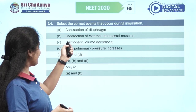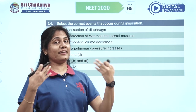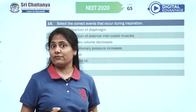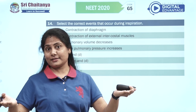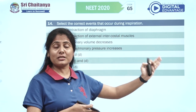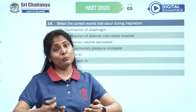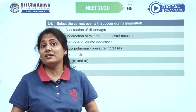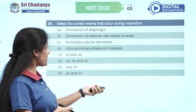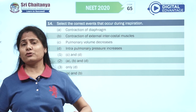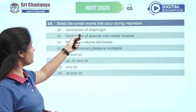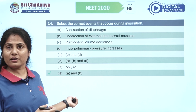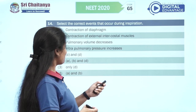Select the correct events that occur during inspiration. When you breathe in: contraction of the diaphragm — it becomes flattened — and contraction of external intercostal muscles, which raise the ribs (bucket handle movement and pump handle movement). Pulmonary volume does not decrease — it increases. Intrapulmonary pressure does not increase — it slightly decreases. So A and B, the fourth option, is your right option.